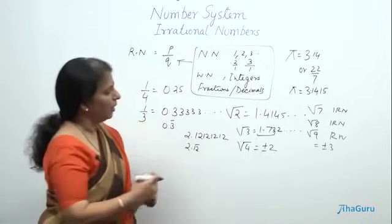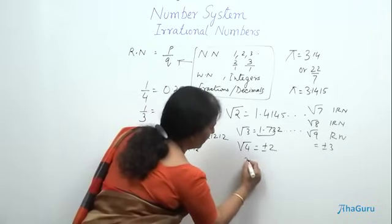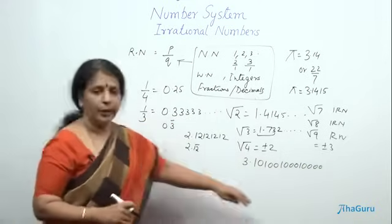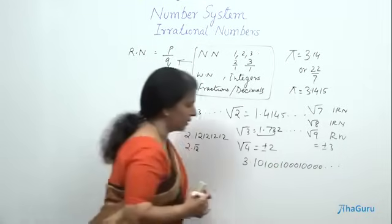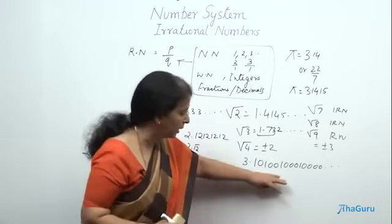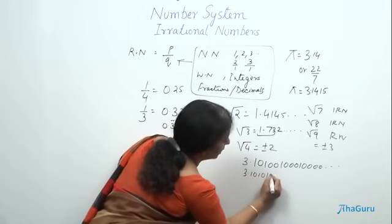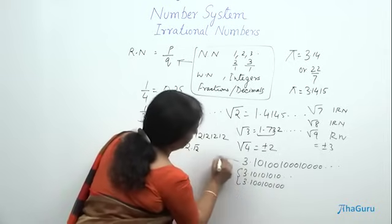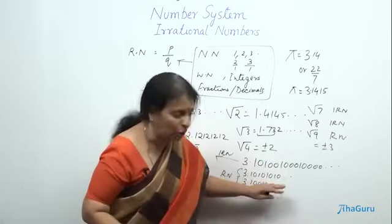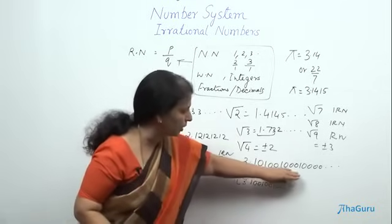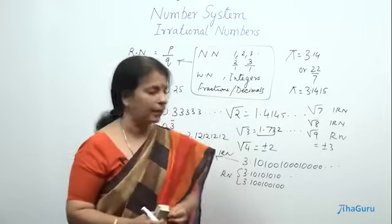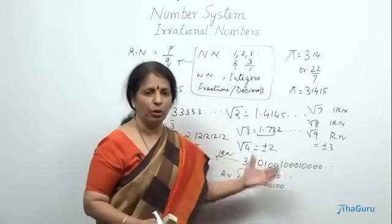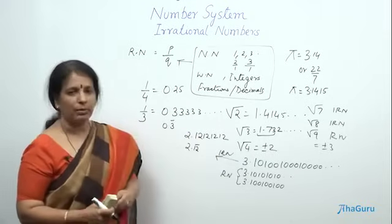If I have to give an irrational number in decimal form, I can write 3.10100100010000... Do you think there is any recurring pattern? No. This is very different from 3.101010... or 3.100100100100... These two are rational numbers because they repeat with a pattern. But 3.10100100010000... is irrational because there is one 0, then two 0s, then three 0s, then four 0s. It's not repeating with a pattern, so this cannot be written in P by Q form.